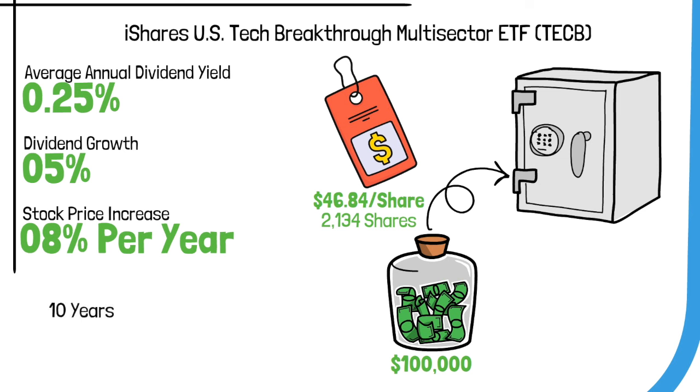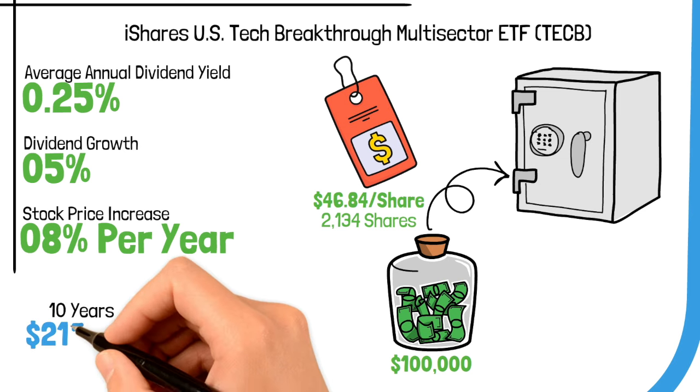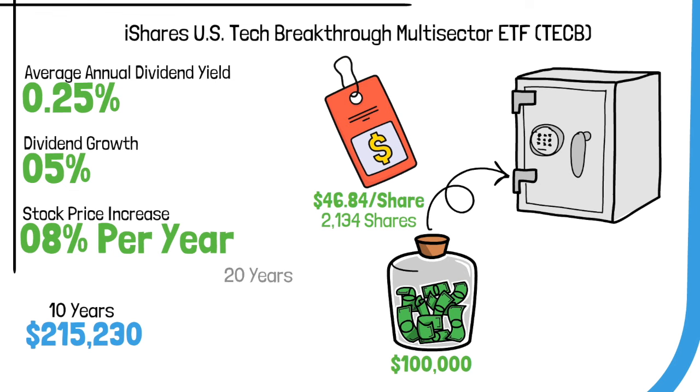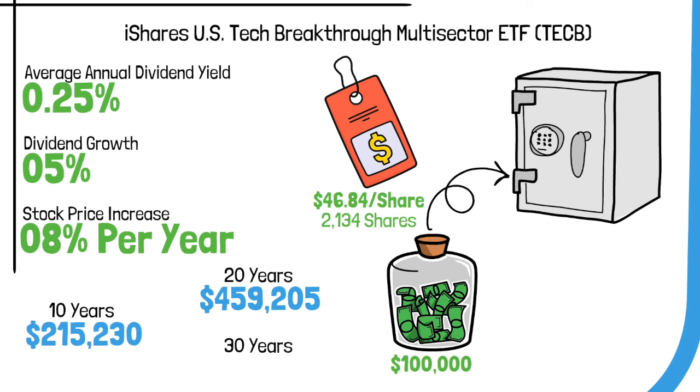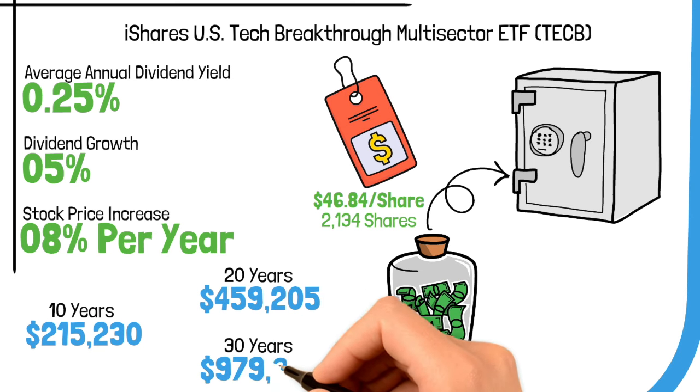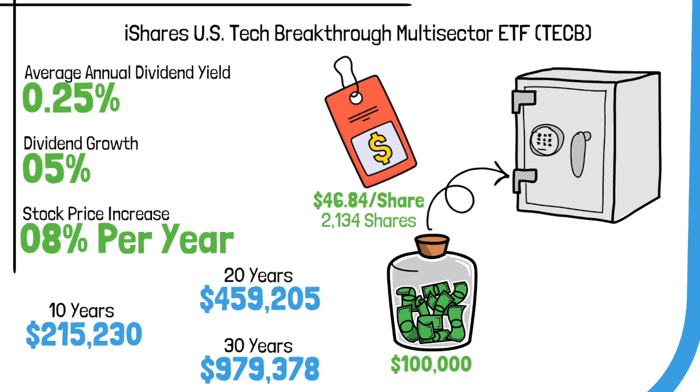After 10 years, your $100,000 could grow to about $215,000. Over 20 years, it might reach $459,000. And after 30 years, it's projected to be approximately $979,000. TECB's broad-sector coverage ensures steady growth with moderate risk, making it a balanced choice for investors.